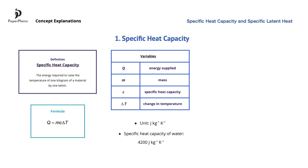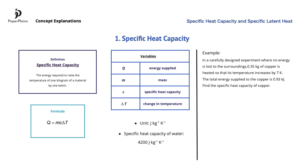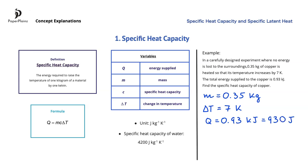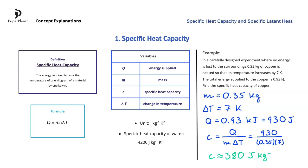Let's see a specific heat capacity example. Here we have to find the specific heat capacity of copper based on an experiment. We know that m, the mass, is equal to 0.35 kilograms; delta T, the change in temperature, is 7 Kelvin; and the energy supplied is equal to 0.93 kilojoules, which I will convert into joules to get 930 joules. Rearranging our formula for C, we get C is equal to Q over m times delta T. Substituting gives us 930 divided by 0.35 times 7. So C is approximately 380 joules per kilogram per Kelvin.